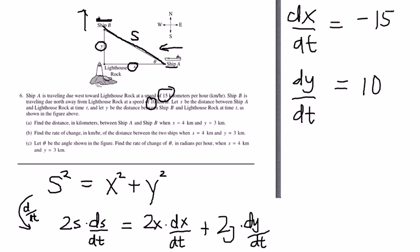Part A, find the distance in kilometers between ship A and ship B when x is 4 and y is 3. Hopefully, you can see right away that that's 5, because x is 4, 4 squared plus 3 squared equals 5 squared.